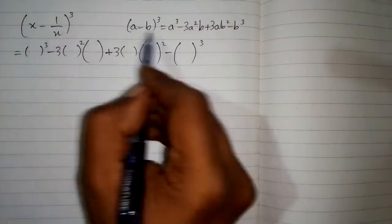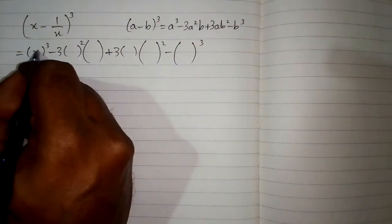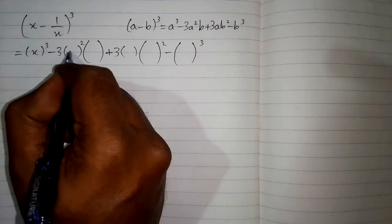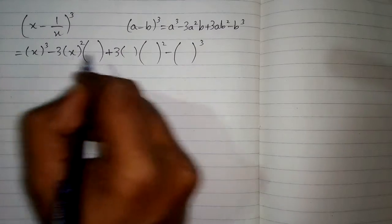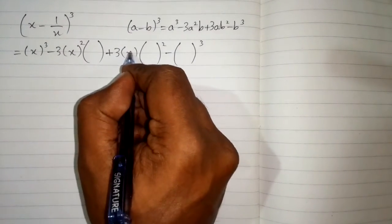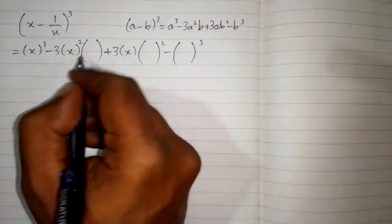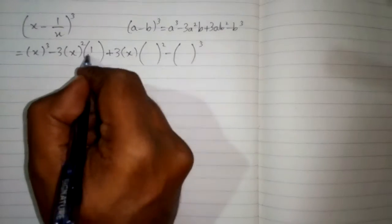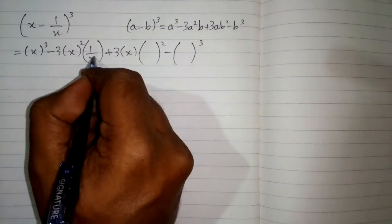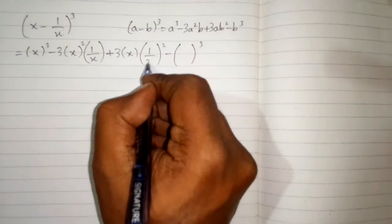We have x in place of a and 1 upon x in place of b, so we will substitute x and 1 upon x into their respective positions in the formula.